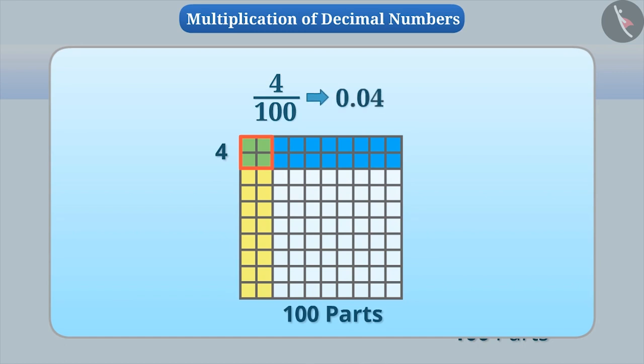Because in the given figure, each small square is 1 by 100th part of the square, which is 0.01. Since 4 out of 100 parts are common, we can say that 4 by 100th part or 0.04 parts in total square is common.